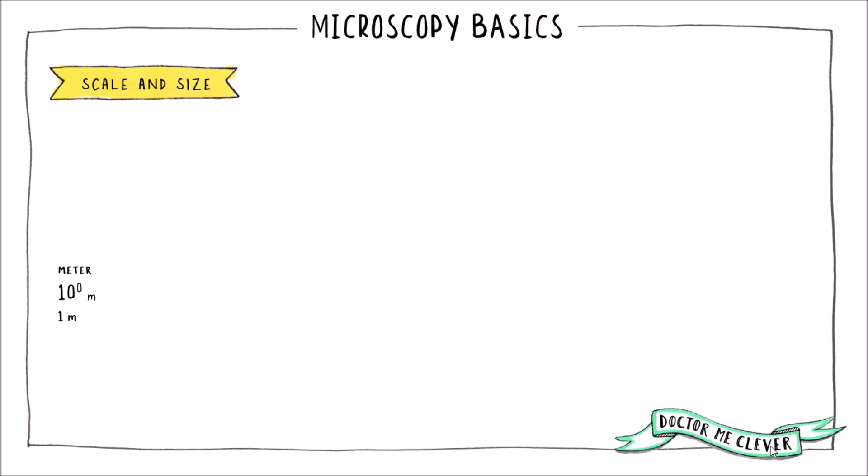You need to have an understanding of size and scale when it comes to microscopes. Let's go through some measurements first and then see where the human eye, light microscopes, and electron microscopes relate to this scale. We're all familiar with what a metre is, and a centimetre, which is one hundredth of a metre.